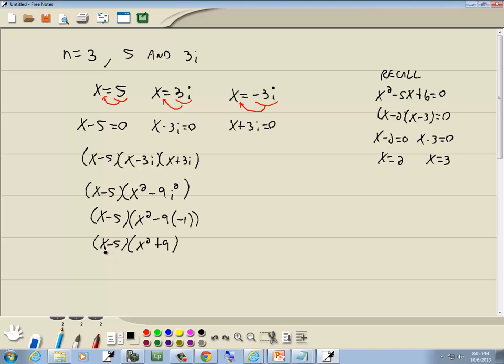And when we multiply this together, x times x squared is x to the third, negative 5 times x squared is negative 5x squared, 9 times x is 9x, and 9 times negative 5 is negative 45. So our answer is x to the third minus 5x squared plus 9x minus 45.